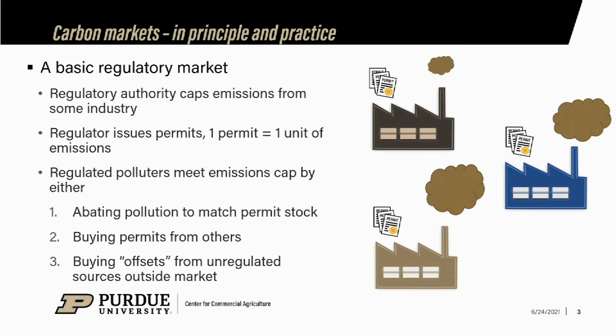The basic way these things work: a regulatory authority — US EPA, state EPA — comes along and says we've got too many emissions from a particular industry. We want to control that, so we're going to set an emissions cap — the total limit on carbon emissions that industry can generate. Then we issue permits in accordance with that cap. These permits give the holder the right to emit one unit of pollution per permit, and the units are usually metric tons of carbon equivalents.